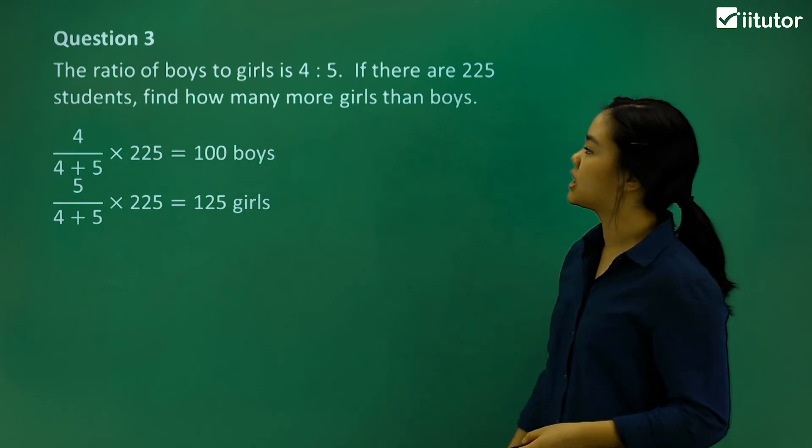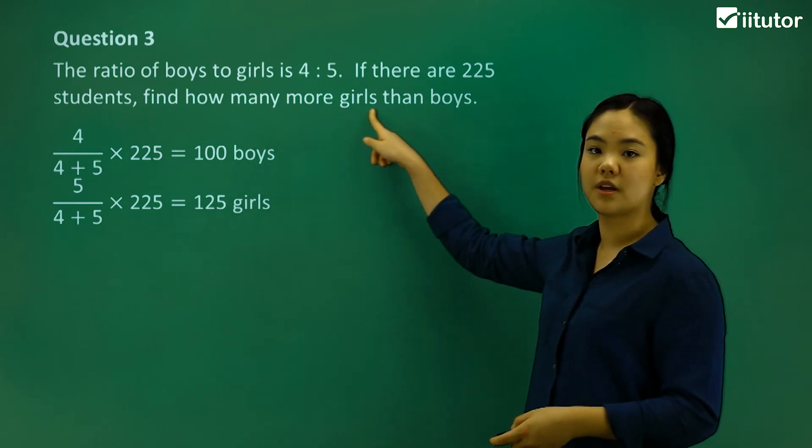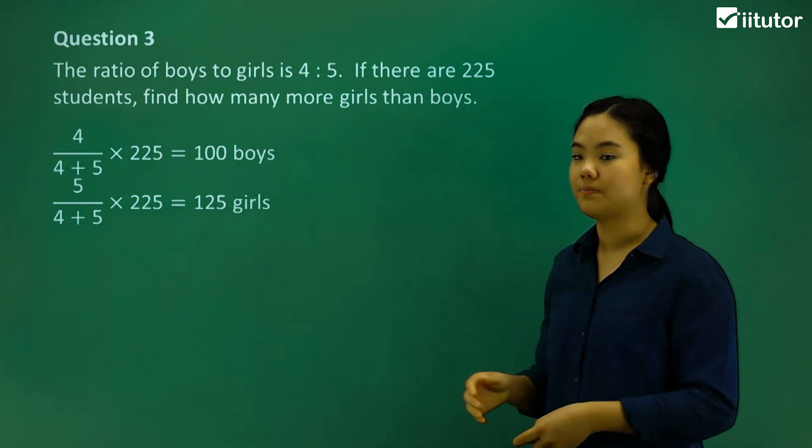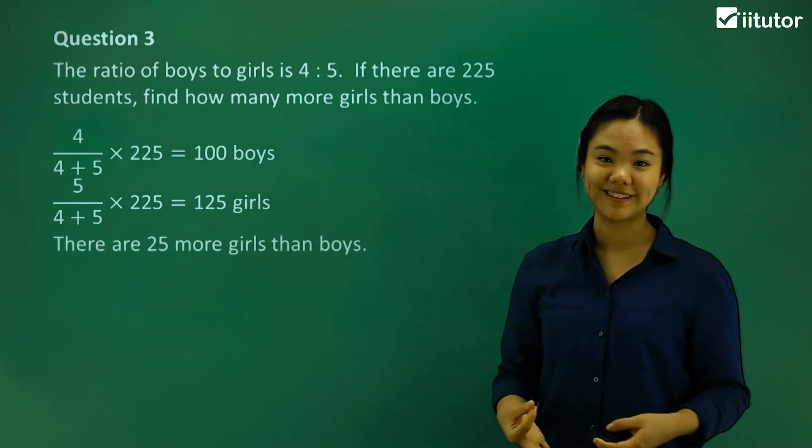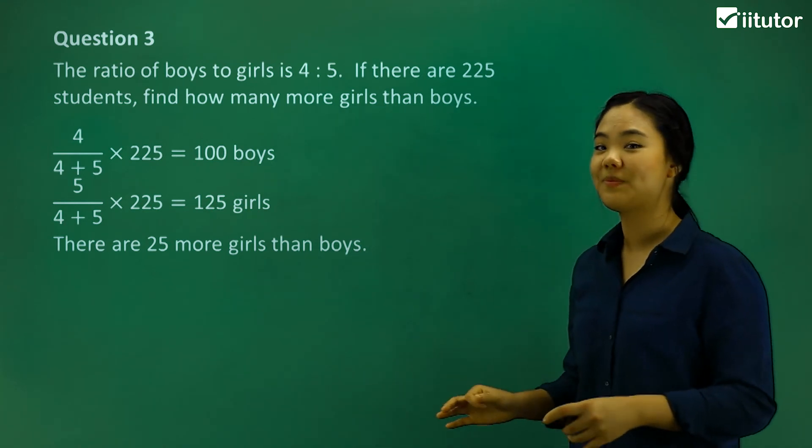Okay, so we need to answer the question, how many more girls are there than boys? So we just minus. There are, therefore, 25 more girls than boys. Okay? Do we get that?